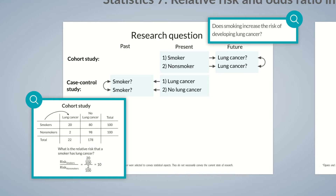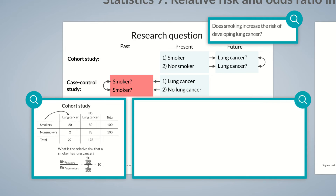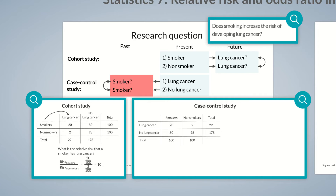Answering our research question using the case-control study is a bit more difficult. We don't separately consider smokers and non-smokers; the groups compared are participants with or without lung cancer. We also don't measure the frequency of lung cancer but the number of smokers in each group. Using the same values: of the 22 cases with lung cancer, 20 participants were smokers and 2 were non-smokers. Of the 178 controls without lung cancer, 80 were smokers and 98 were non-smokers. Notice how we've inverted the 2x2 table.